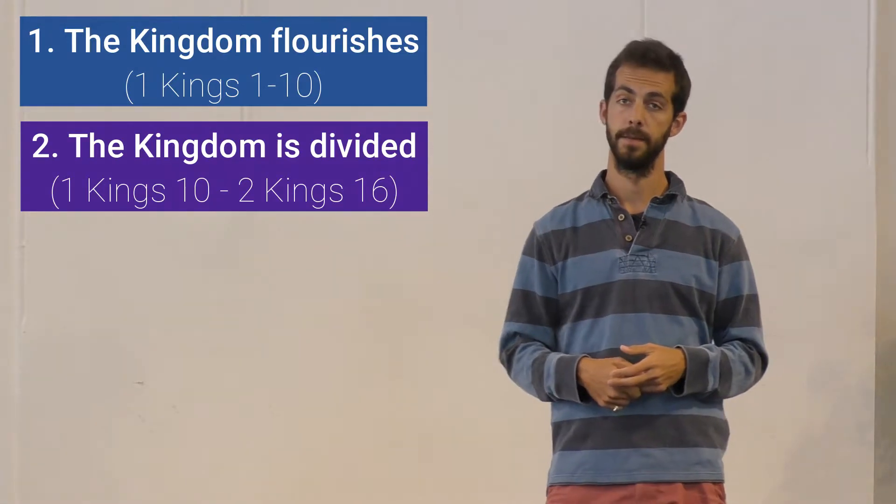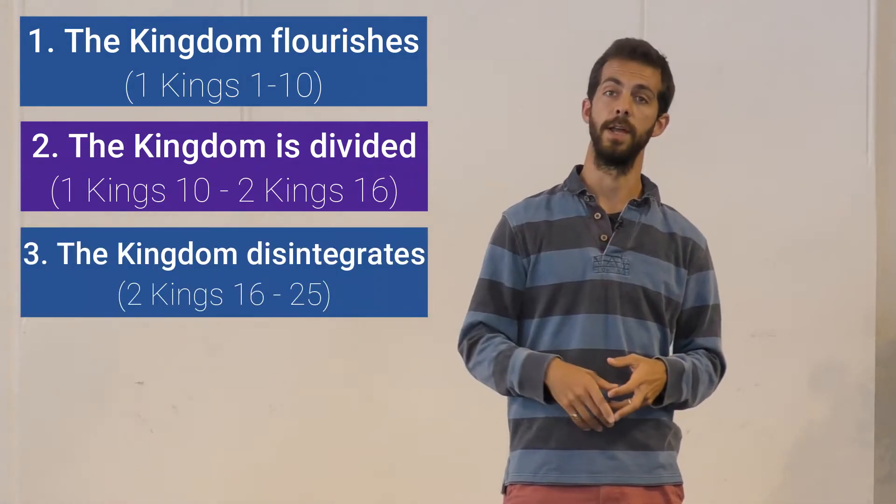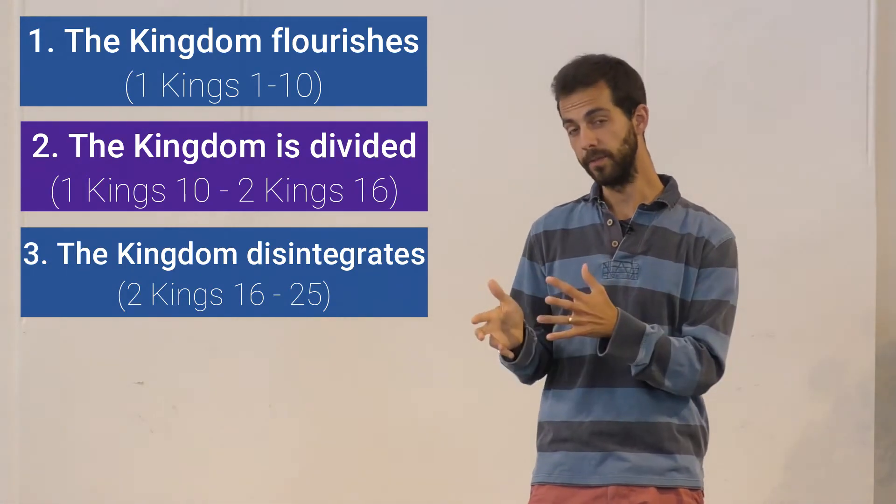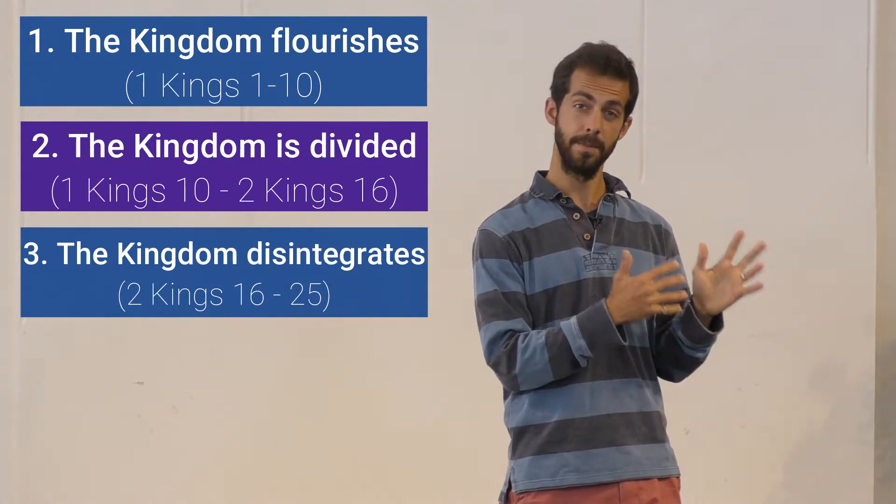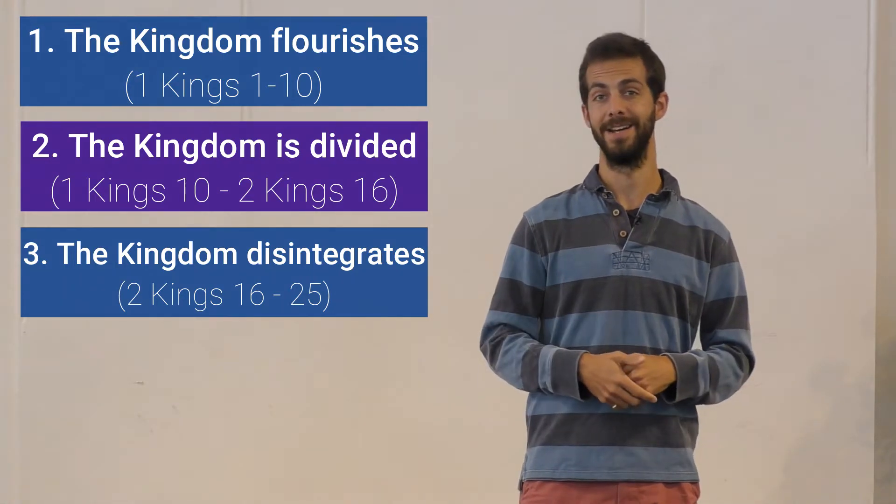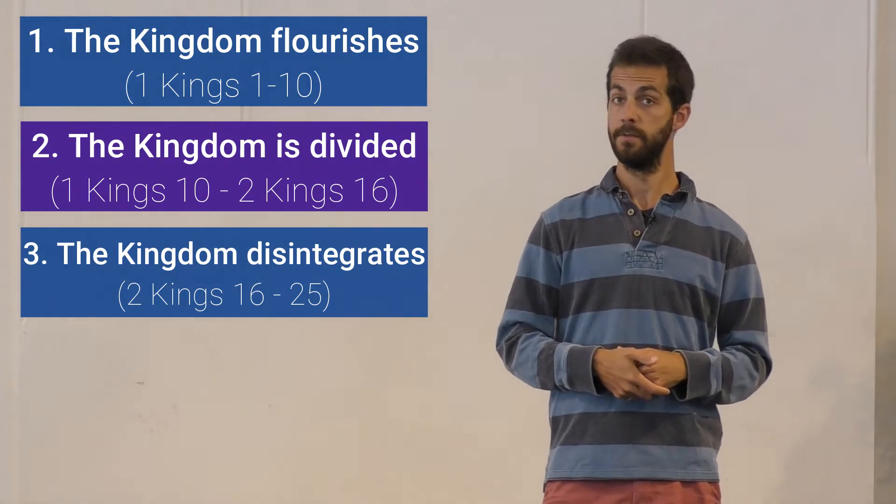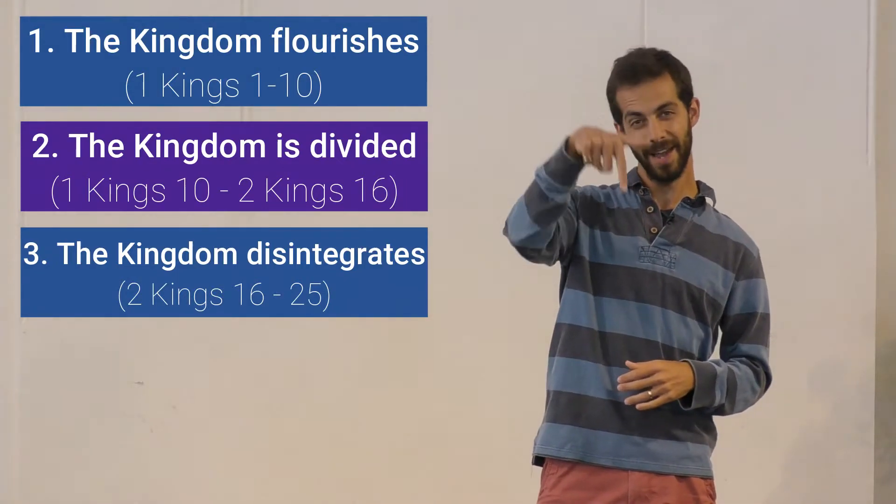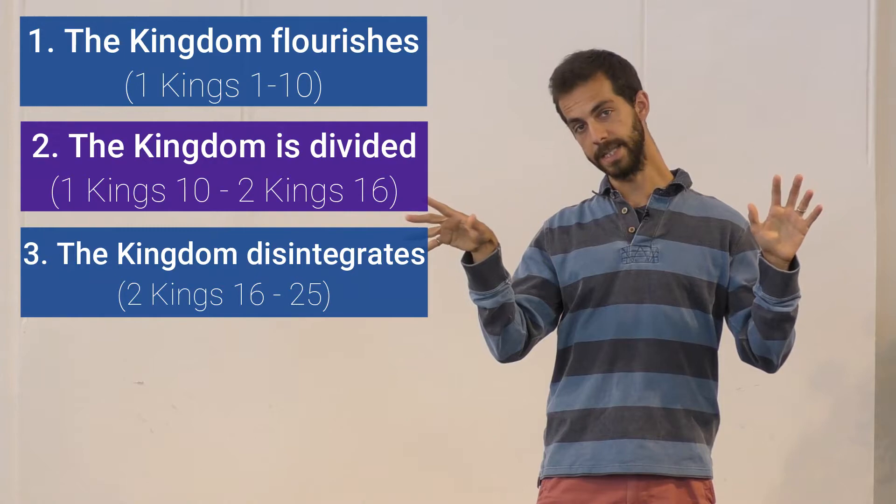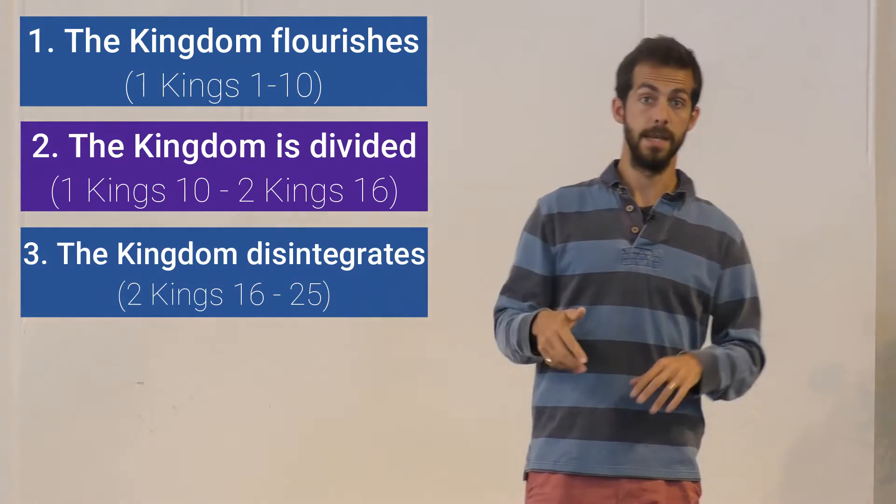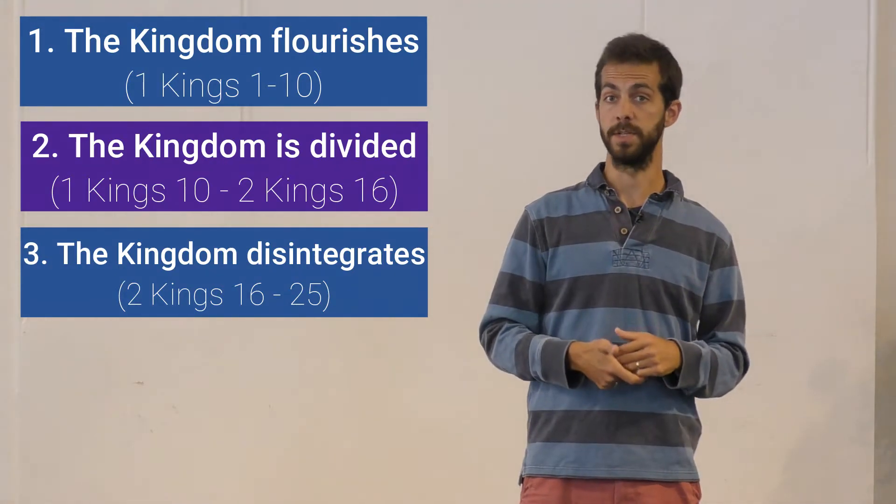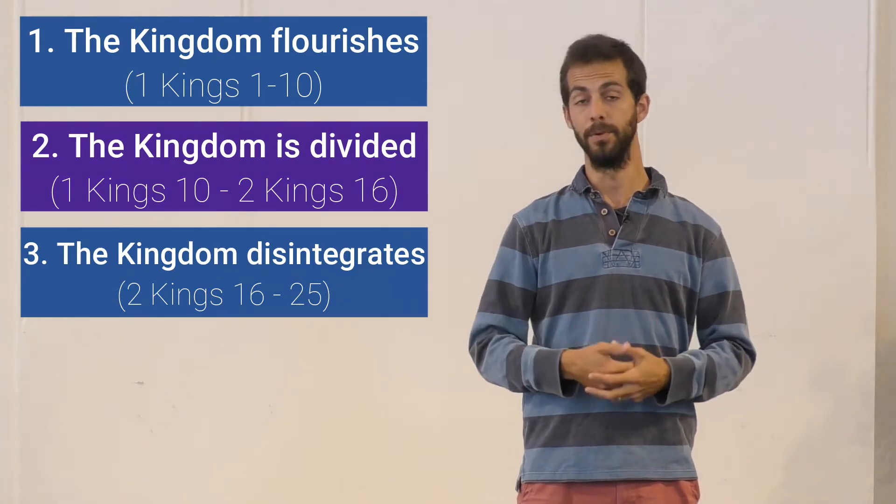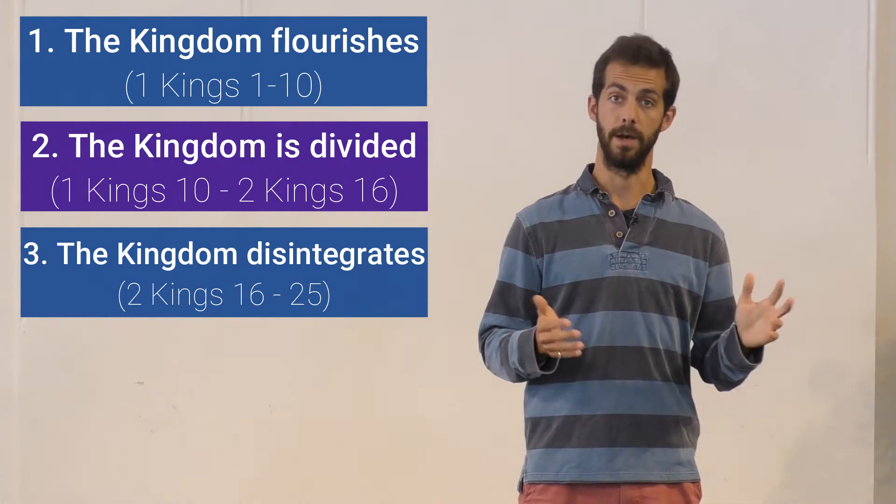Almost inevitably, the kingdom disintegrates in chapters 17 to 25 because of these foolish kings and despite the best efforts of some of the better kings like Hezekiah and Josiah. First, the northern kingdom of Israel is invaded by the Assyrians and the people taken into exile. And then, it's the southern kingdom of Judah's turn as they're invaded by the Babylonians and their people are taken into exile, out of the land.